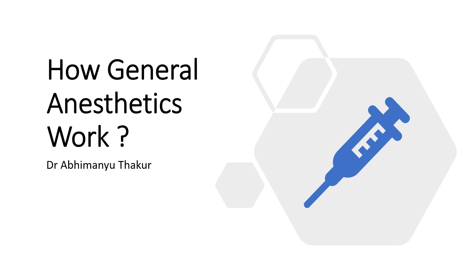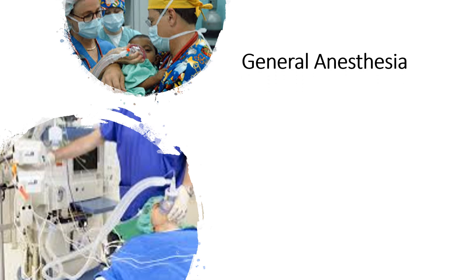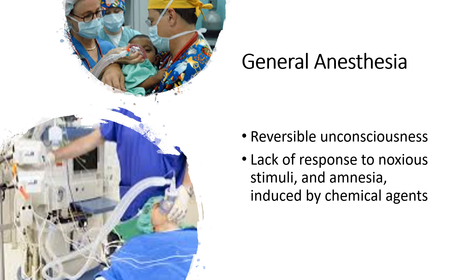Hi everyone, this is Pharmacist and Drugs, and today I'll be talking about how general anesthetics work. General anesthesia is used to induce a reversible unconscious state, making patients unable to feel or remember anything from their time under anesthesia. This is done using a combination of chemical agents. Some effects include lack of response to noxious stimuli, amnesia, sedation, muscle relaxation, and a raised pain threshold.